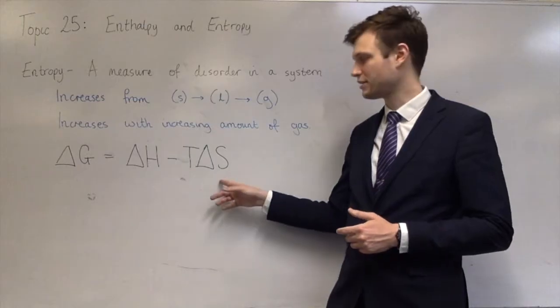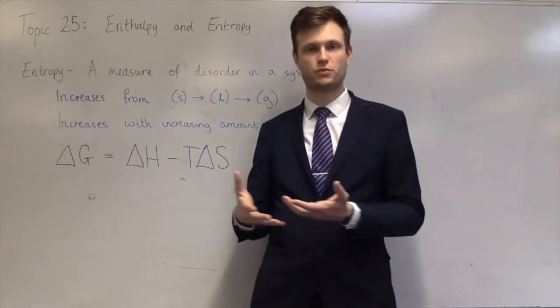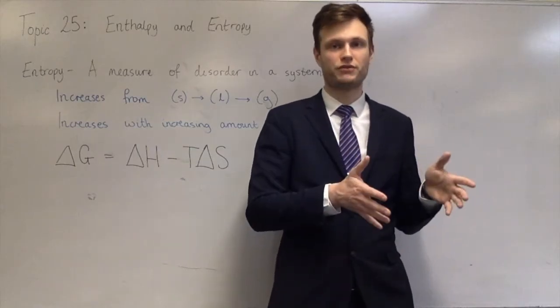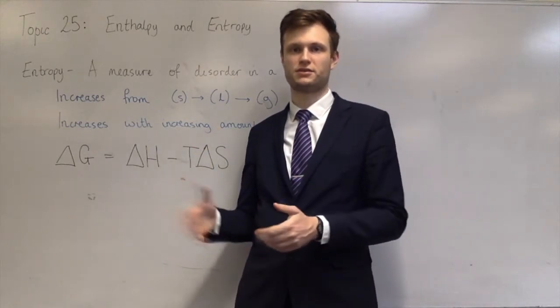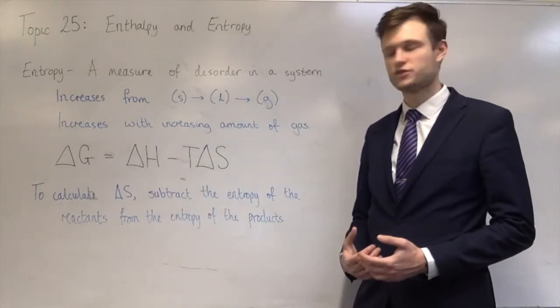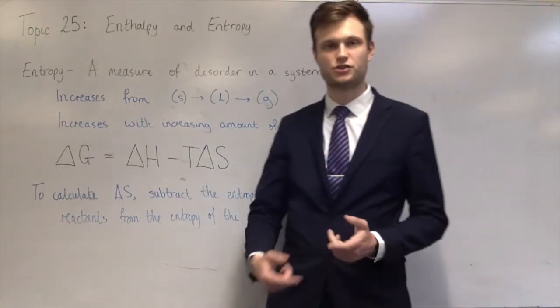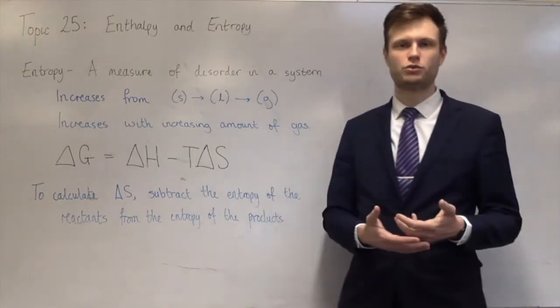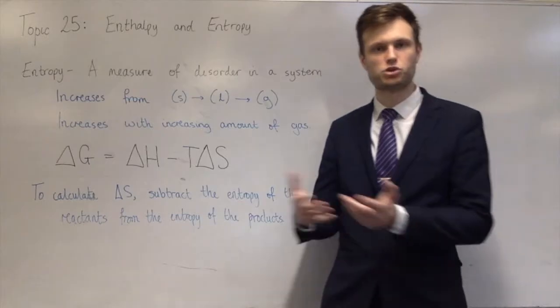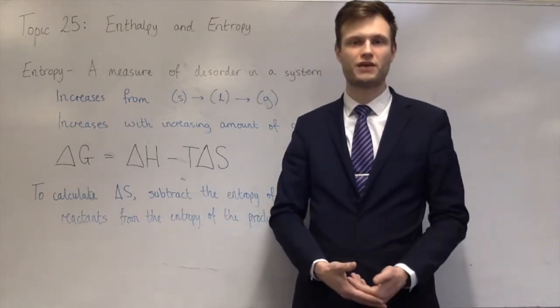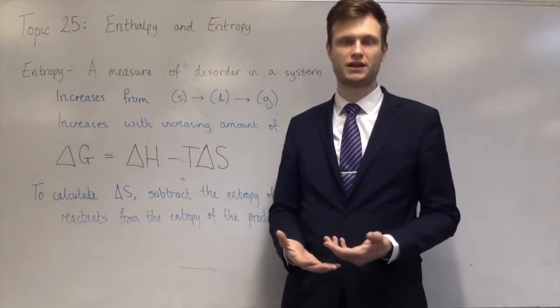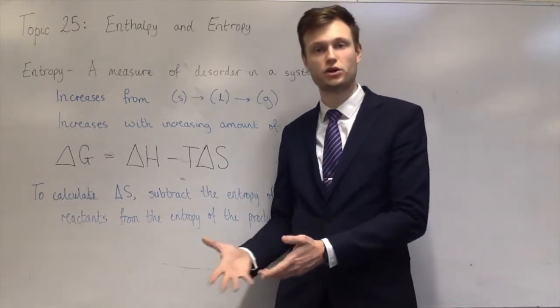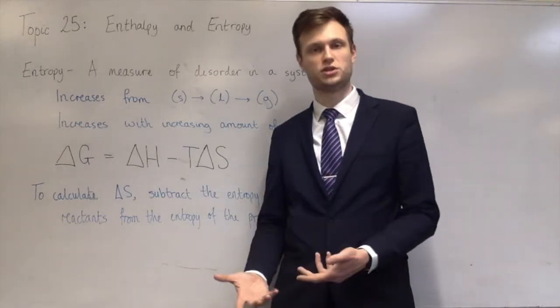The way to calculate the entropy change is you'll be given data for the entropy of the reactants and the products. And you just do the entropy of the products minus the entropy of the reactants. It follows the same rules as other things we've done. You'll get entropies as joules per kelvin per mole, add together all the entropies of the products, add together all the entropies of the reactants. If the products have more entropy than the reactants, that means you have a positive entropy change. That's getting more disordered. If the reactants have more entropy than the products, that means it's getting more ordered.